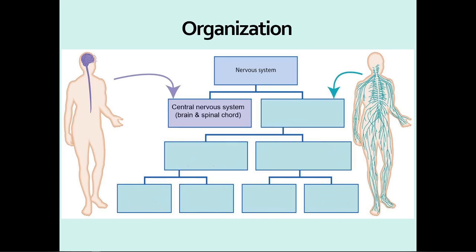The nervous system breaks down into two parts. The central nervous system, also known as your CNS, is your brain and spinal cord — well protected within your body. Both are encased within bone: your skull encases your brain, your vertebrae encase your spinal cord. These are structures you cannot live without; you can damage them, but it will have far-reaching effects on your overall life.